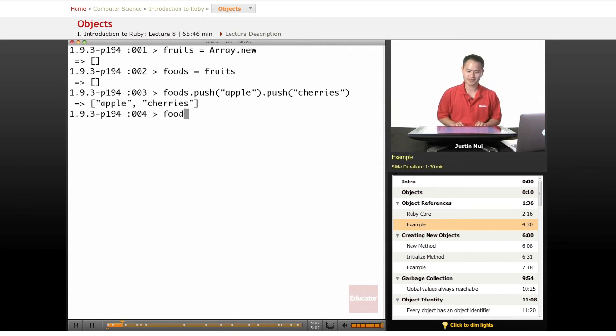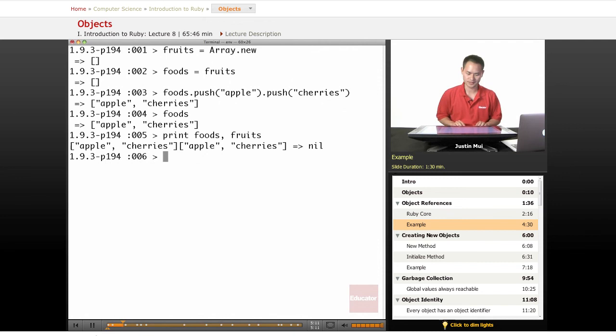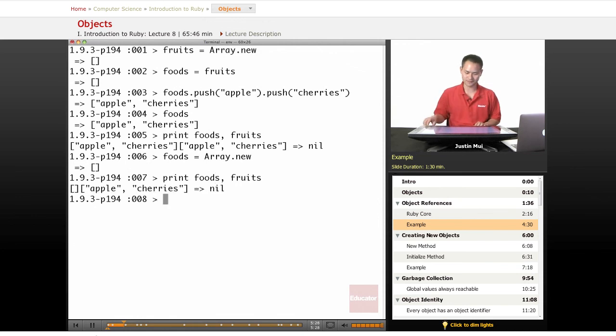So now you see if we do foods, there's two elements in the array. And we can go ahead and compare foods, fruits. And you'll notice they both have the same element. But if I do on the foods, I create a new array. Now it has a different reference. So when I do the print, right there you'll notice the foods is empty and the fruits still has the two elements there.